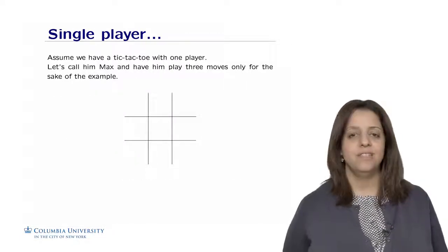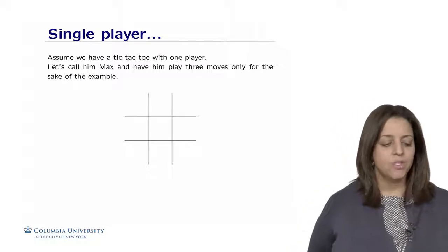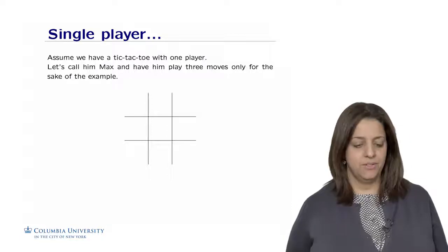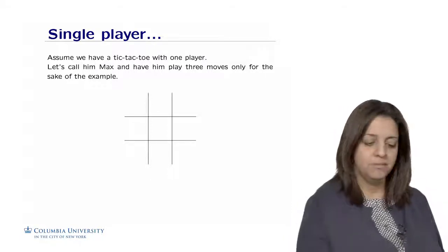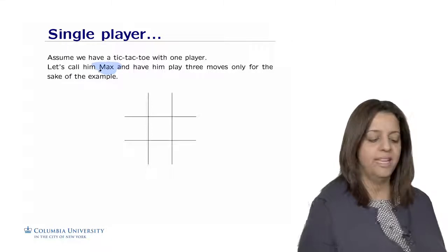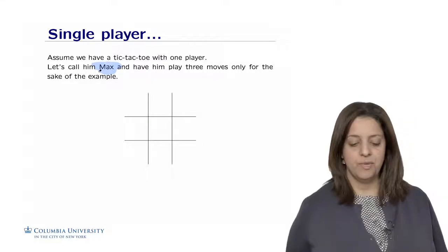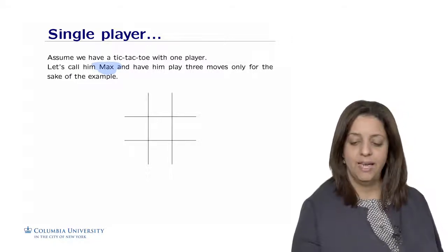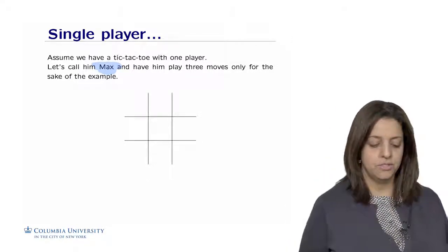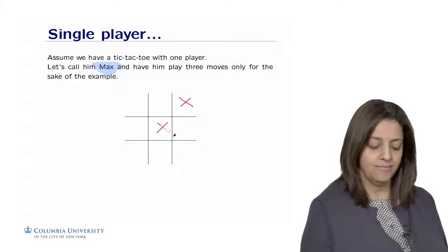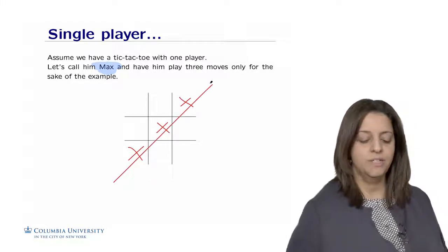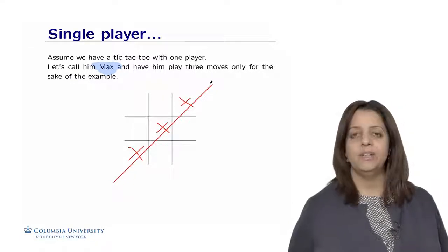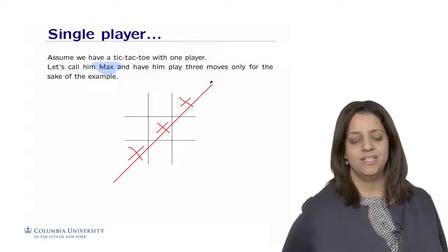Let's think about a single player. We assume a tic-tac-toe game with one player, Mr. Max. Max plays three moves only for this example. Max puts crosses on the board, for example like this, three moves. We declare Max wins. This is a possibility when he's by himself with no opponent against him.